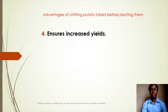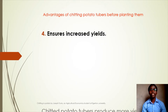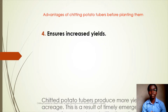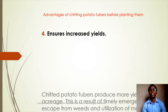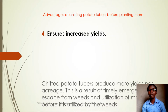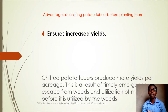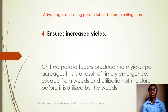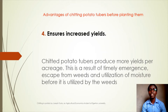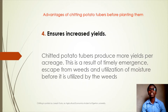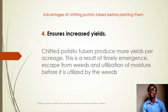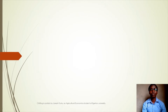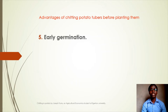This will ensure efficiency in carrying out cultural practices such as weeding, earthing up, and harvesting. Another advantage is that it ensures increased yields. Chitted potato tubers produce more yields per acreage, as a result of timely emergence, escape from weeds, and utilization of moisture before it is utilized by the weeds.